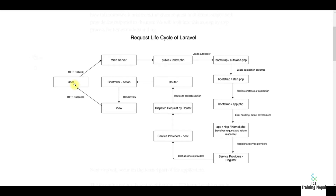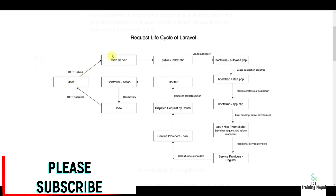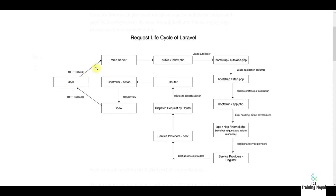When the user hits www.facebook.com, what will happen first is it will go to the web server where the site is hosted. The URL locator searches in the web server, and the web server always hits the public index.php. Any type of website — when we make an HTTP request it will go to the web server and hit the index page, whether it's index.js, index.php, or index.html.